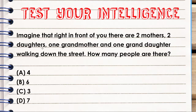Imagine that right in front of you there are two mothers, two daughters, one grandmother, and one granddaughter walking down the street. How many people are there? Pause this video, try to solve this problem, give me your answer, and I will give my version of the answer.